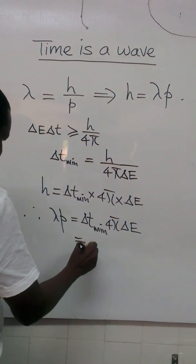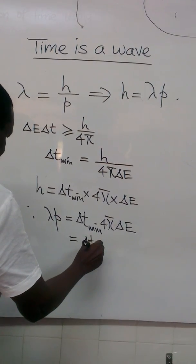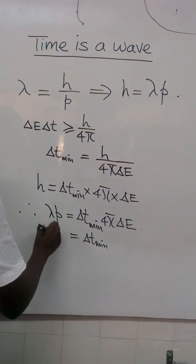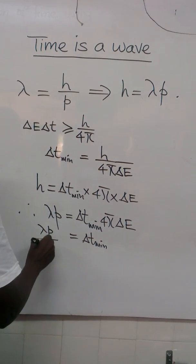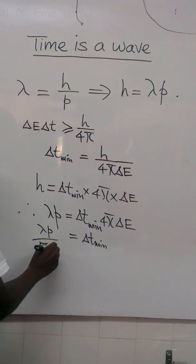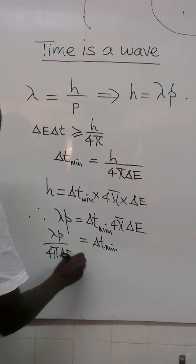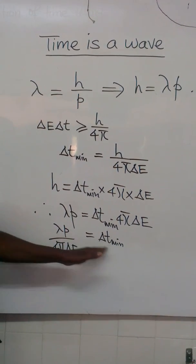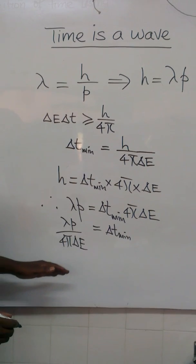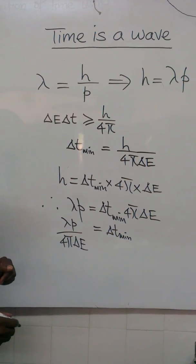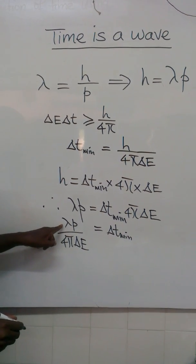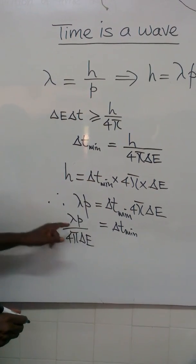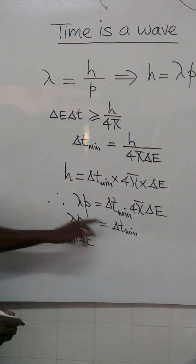The minimum uncertainty in time must then be equal to lambda p over 4pi times the uncertainty in energy. Here lambda represents wavelength, p is momentum, and this is the change in energy. This means time has a constant.